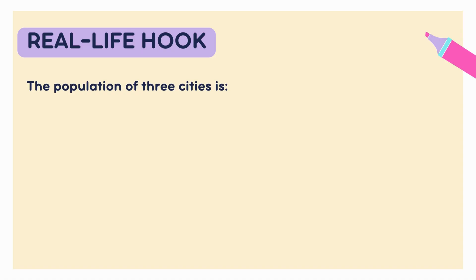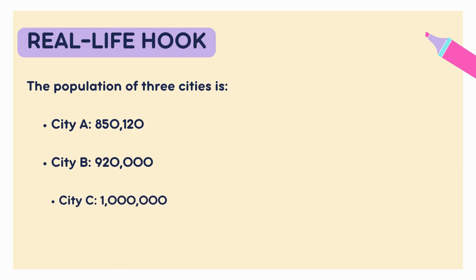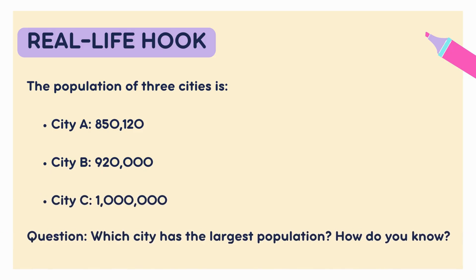Let's start with this real-life example. Here are the populations of three cities. City A has 850,120 people. City B has 920,000. City C has exactly one million. Which city has the largest population? Pause the video, write them down, and order them from smallest to largest. Feel free to post it in the comment section below too. Yes — City C, because one million is greater than the rest.